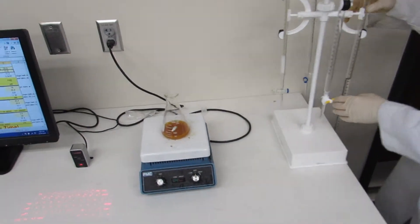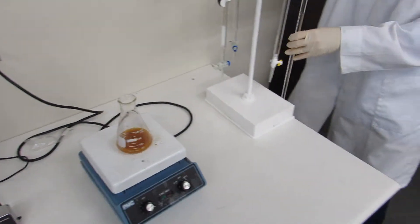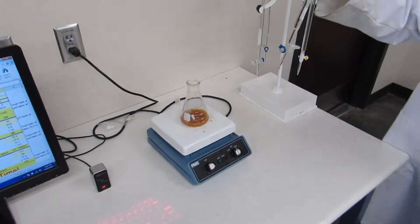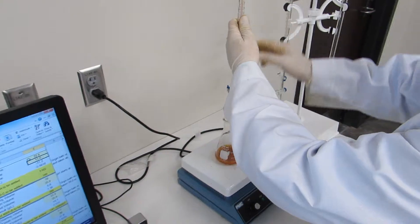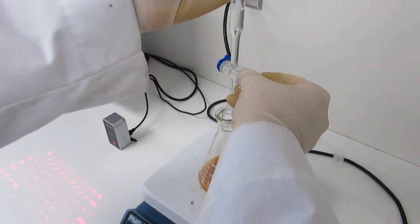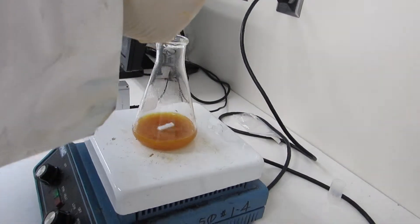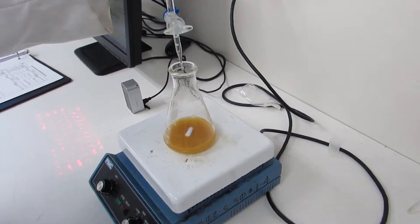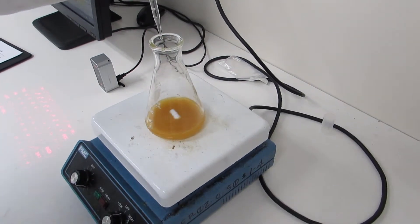But first we put back thiosulfate. Now we titrate. To do that, you take it out and you slowly pour some in until you get yellow coloration. Now that is yellow.